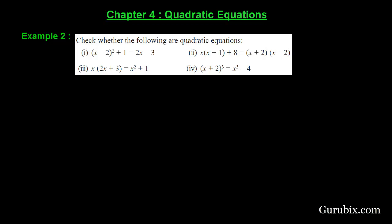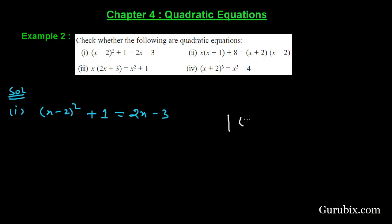In Part 1, we have to check whether the given equation is quadratic or not. We are given (x - 2)² + 1 = 2x - 3. First, we shall expand (x - 2)² using the identity: (a - b)² = a² - 2ab + b². Applying this, we get x² - 4x + 4.